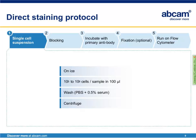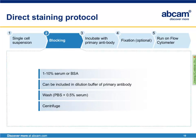Depending on the sample preparation procedure, the cells should be washed using a buffer like PBS that includes serum or BSA, then spun down and the supernatant removed. The next step is a blocking step, which can be done by adding a buffer with 1 to 10% serum or BSA to the cell pellet. The blocking reagent can also be included in the dilution buffer of the primary antibody. This step is again followed by washing and centrifuging the cells.